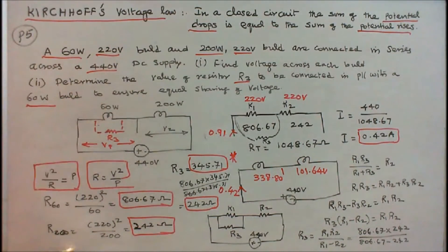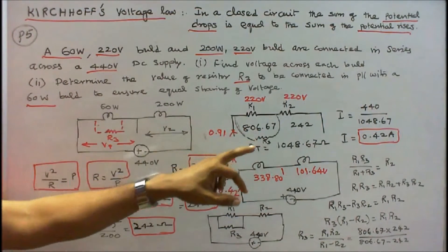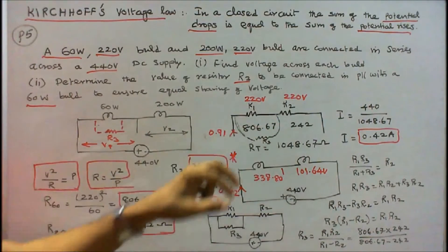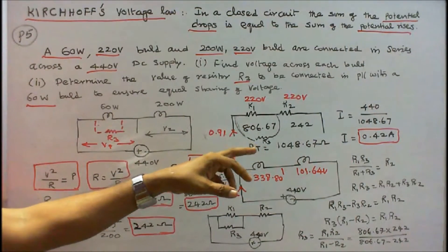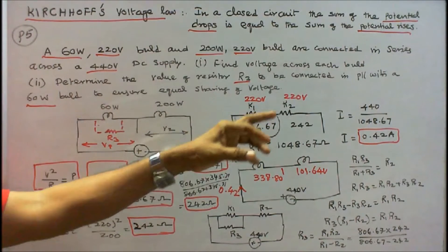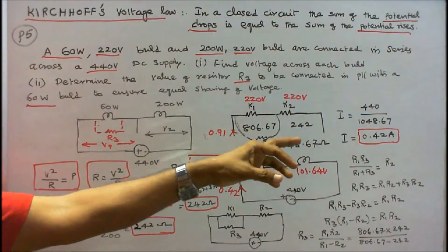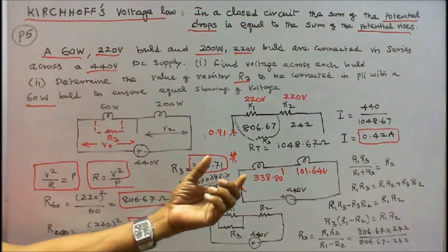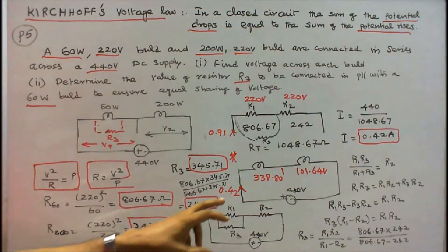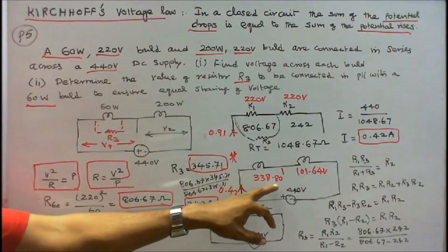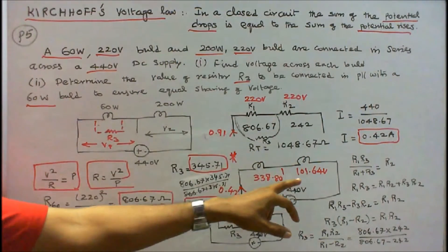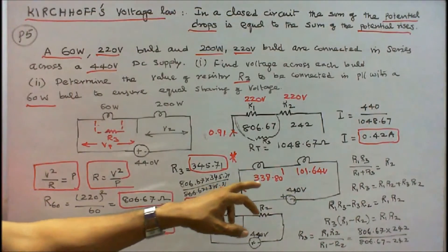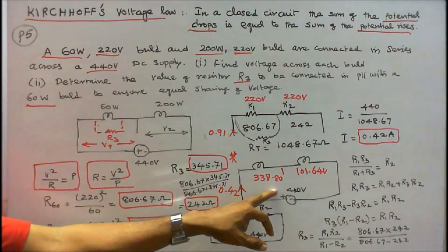Similarly, the resistance of the 200W bulb is 220² / 200 = 242 ohms. I redraw the diagram with R1 = 806.67 ohms and R2 = 242 ohms. The total resistance is 806.67 + 242 = 1048.67 ohms. I = 440 / 1048.67 = 0.42 amps. Voltage across the 60W bulb is 0.42 × 806.67 = 338.80V. Voltage across the 200W bulb is 0.42 × 242 = 101.64V. 338.80 + 101.64 = 440V. Kirchhoff's Voltage Law is verified.